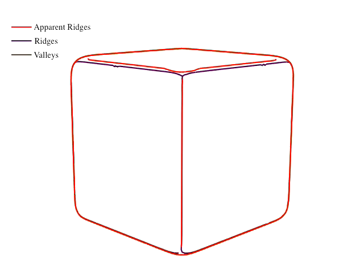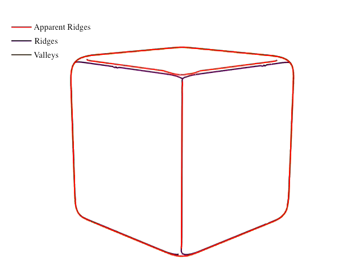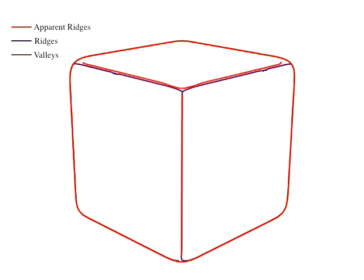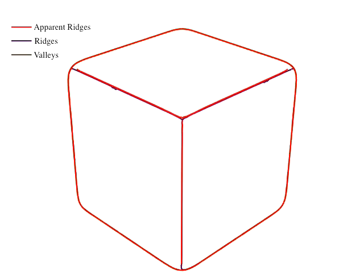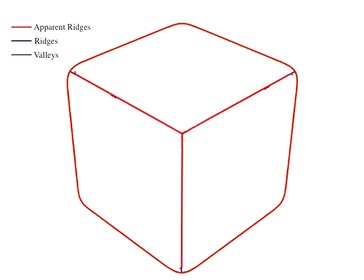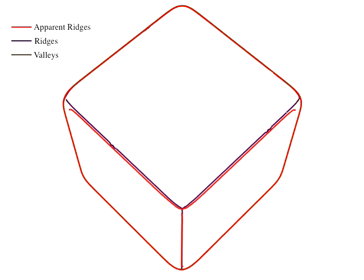While ridge and valley lines are fixed to the surface, apparent ridges slide smoothly along the surface. Apparent ridges are shown in red. Ridges and valleys are shown in purple and brown.